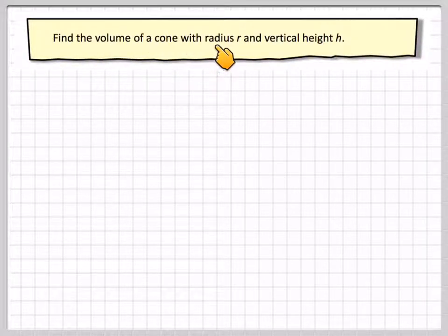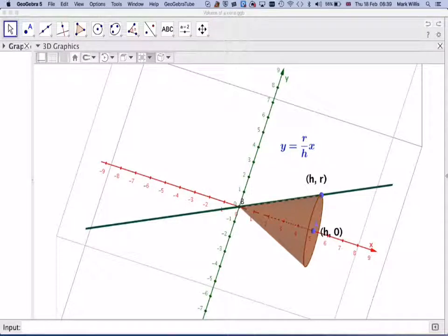Find the volume of a cone with radius r and vertical height h. Now if we need to really look at this in a diagram, here I have a GeoGebra diagram where I have a cone.